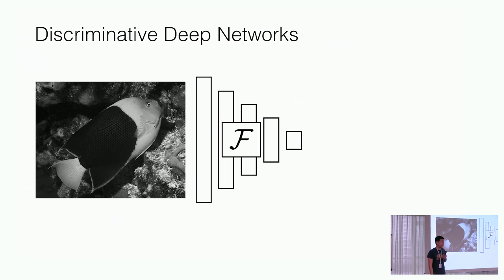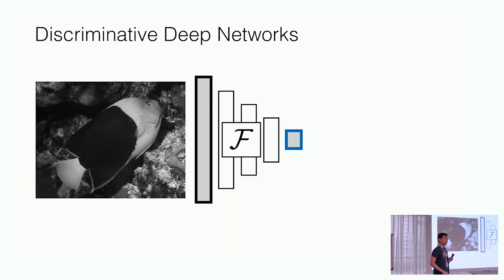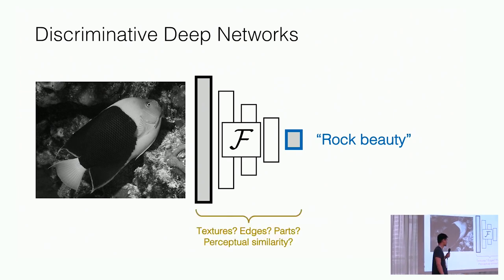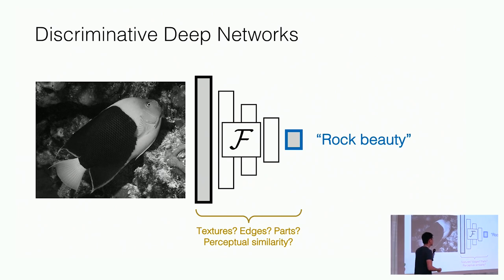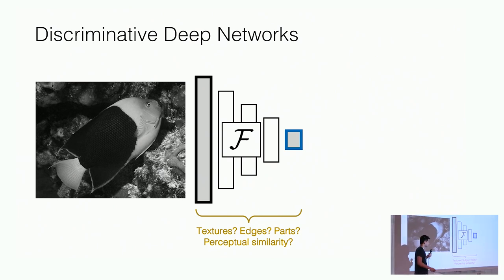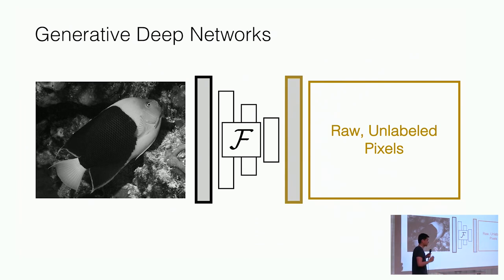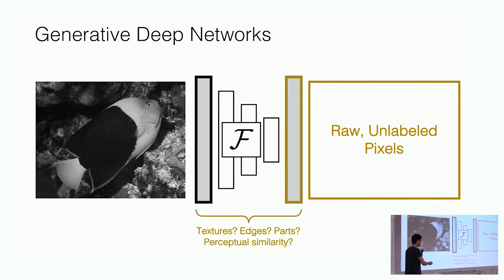Deep nets are extremely adept at mapping noisy high-dimensional signals to clean low-dimensional outputs. For example, a network can tell us that this here is a rock beauty, a type of fish. By solving this heavy compression task, the network actually learns about natural image priors. But the world doesn't often give us these nice clean labels. We're much more likely to see just raw unlabeled pixels. What if that's the signal we have to learn from? Can we get a network to produce a high-dimensional output and solve graphics tasks, and in doing so, get a representation of the natural world?